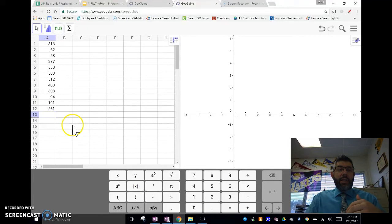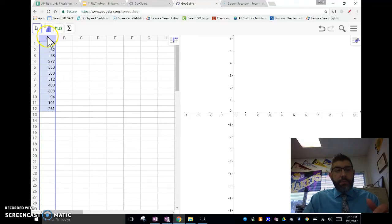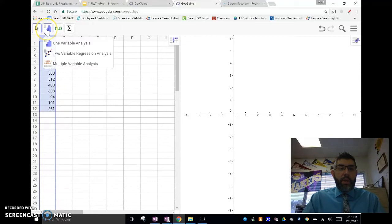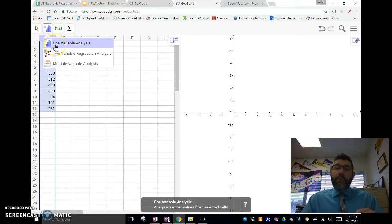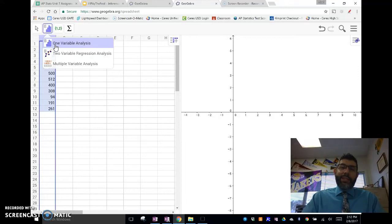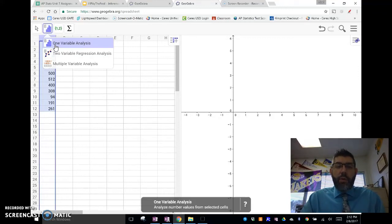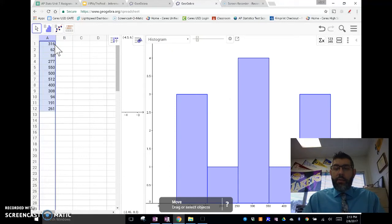All right, so I've entered in my data in my column here, A, and what I'm going to do is, I'm going to highlight this column, and I'm going to click on this little histogram here, and we're going to do a one variable analysis. So, we're looking at one variable, right, weight of gold chains. So, we'll do a one variable analysis, and boom, here's our histogram. So, our histogram pops up.